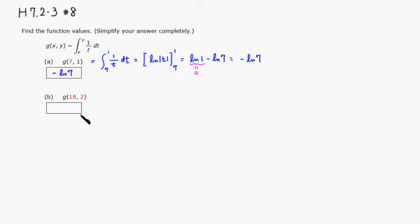Alright, so let's do the other one. So this guy is going to be equal to, x is 18, and y is 2. And then it's the same thing. So only difference is that the upper limit and lower limit are different. So it's the same antiderivative, and you're going from 18 to 2.